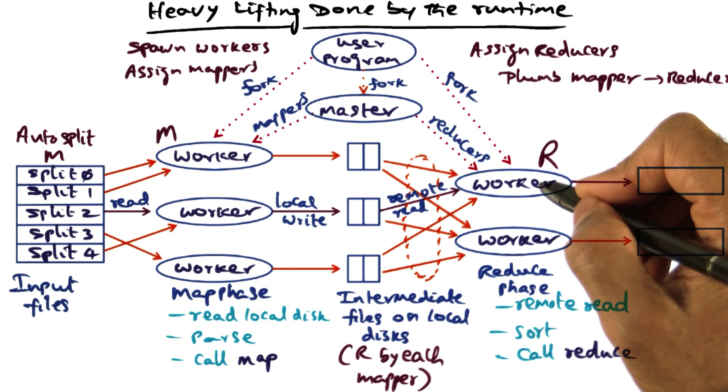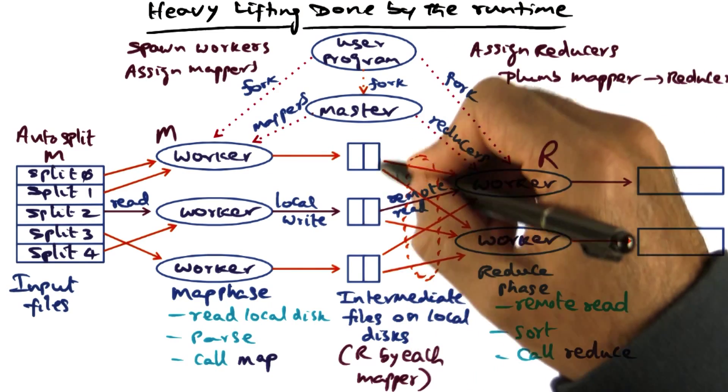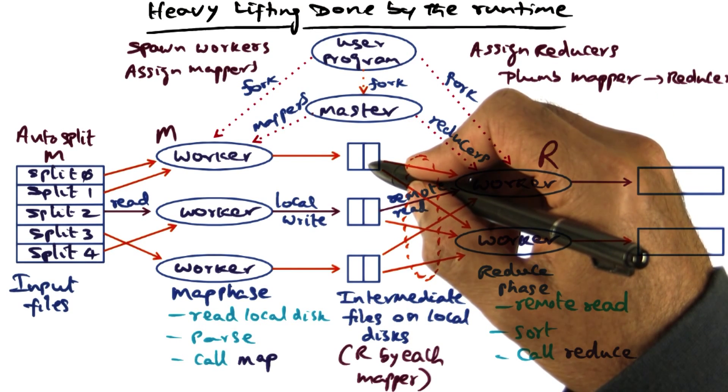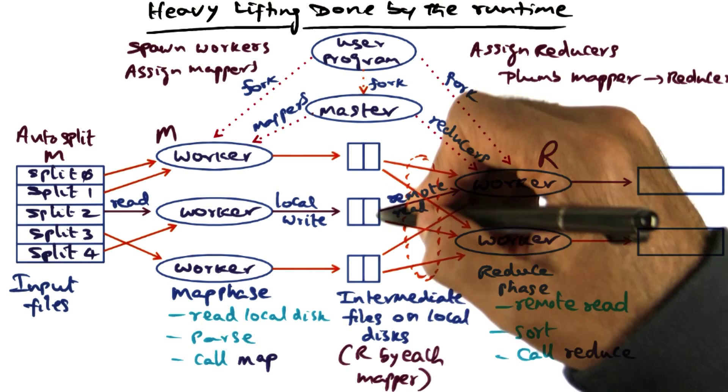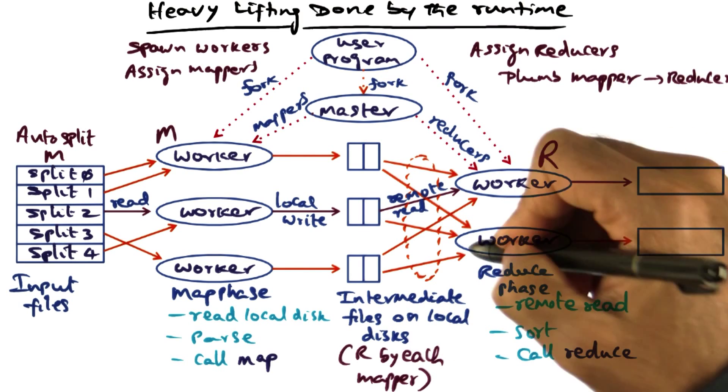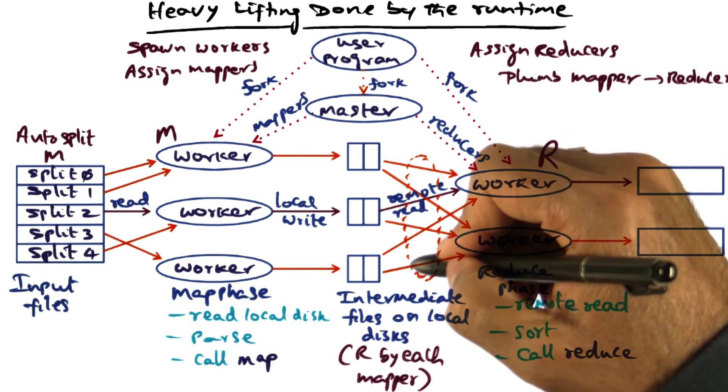And this worker that is carrying out a particular split of the reduce operation has to reach out and pull the data from all of the M mappers that have stored their intermediate results on their respective local disks. So there is remote read that is involved. As the first thing in the reduce phase is to pull the data.